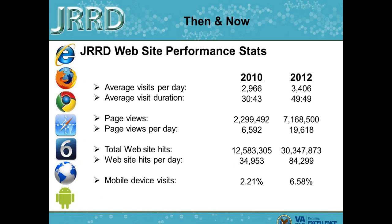This slide illustrates JRRD's website performance overall then and now, showing increases from 2010 through the end of 2012. Average visits per day have increased by 500, and average visit duration has increased to nearly 50 minutes, telling us that the majority of our visitors are staying on our website to read full articles. Page views have shot up to over 7.1 million, or 19,000 per day. Website hits reached an astonishing 30 million in 2012 — that's 84,000 per day, or roughly one per second. Our mobile device traffic has increased to 6.5%, partly due to the increase in popularity of mobile devices, but also our push to make content available on all platforms.